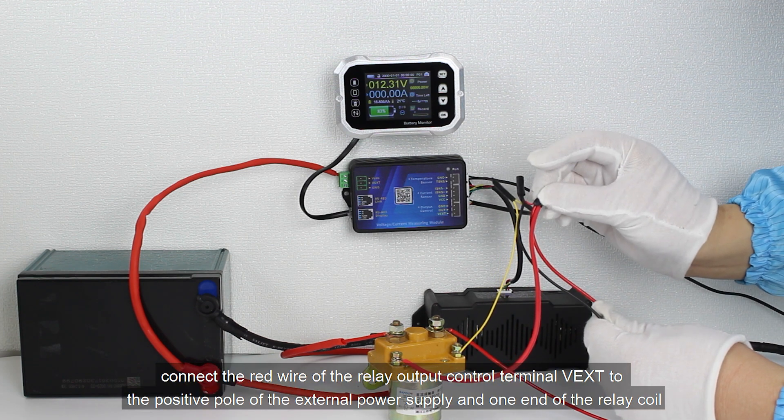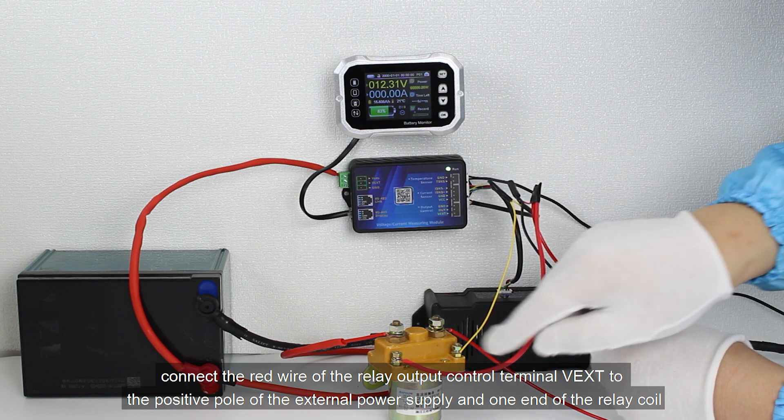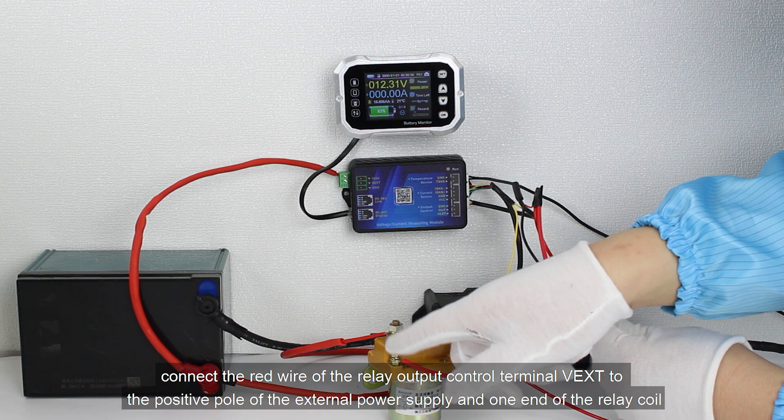Connect the red wire of the relay output control terminal VEXD to the positive pole of the external power supply and one end of the relay coil.